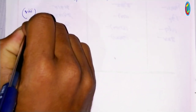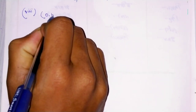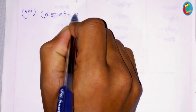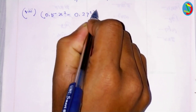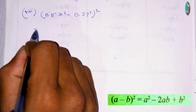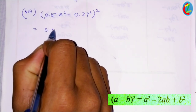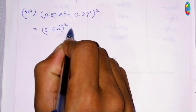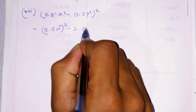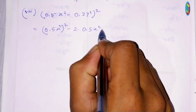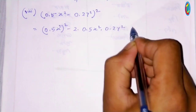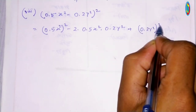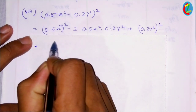Next is the 8th number: 0.5 x squared minus 0.2 y squared, whole square. Using the a minus b whole square formula, that is a squared minus twice a times b plus b squared. So 0.5 x squared whole square minus twice times 0.5 x squared times 0.2 y squared plus 0.2 y squared whole square.